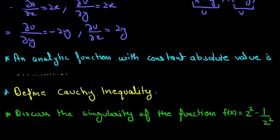So now let's move on to the next question. This question is like, an analytic function with constant absolute value is, and its answer is constant. So only a constant thing has a constant absolute value which is analytic.